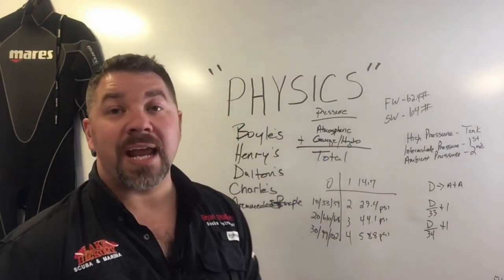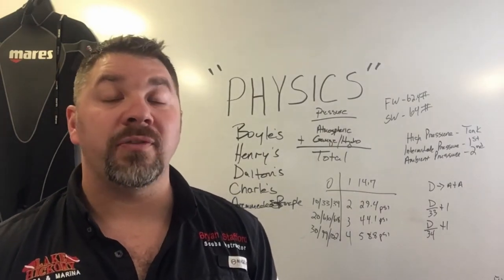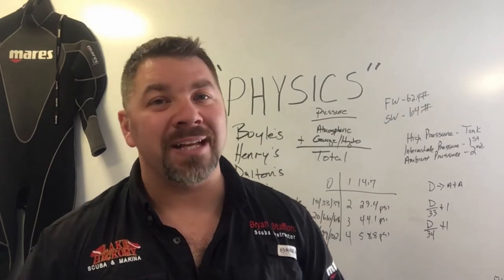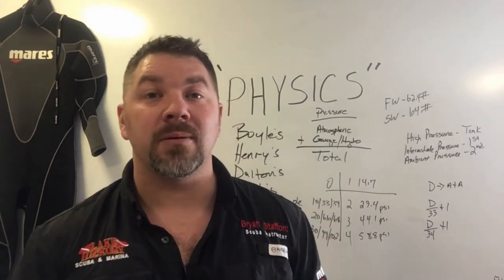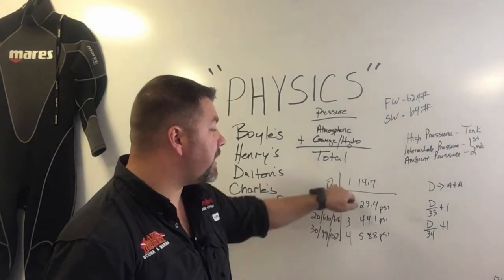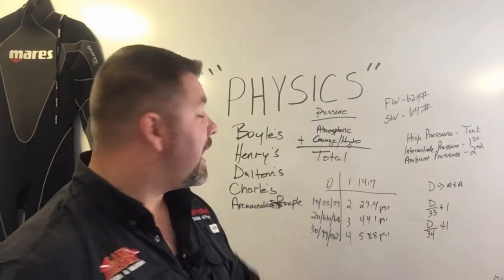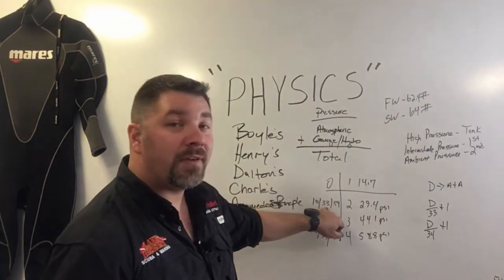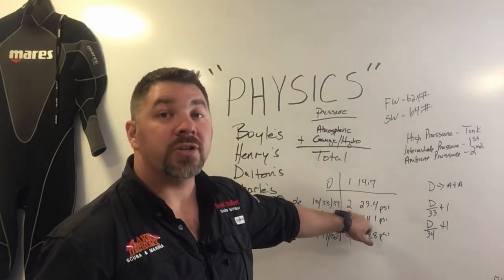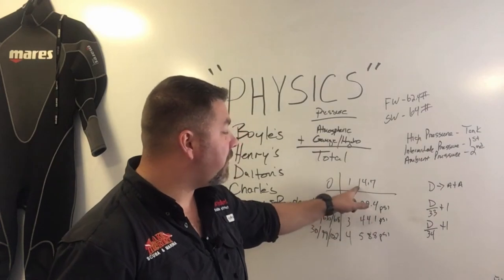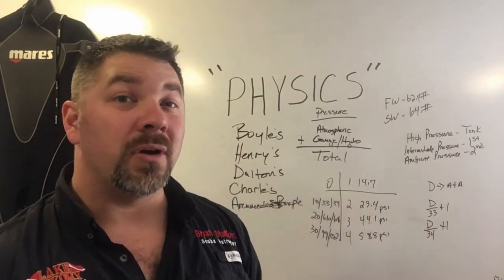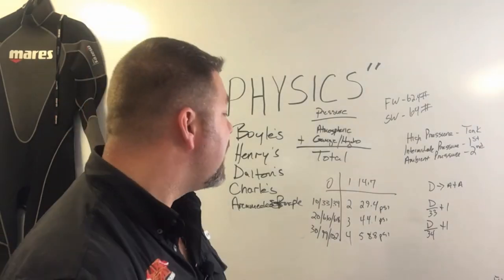Staying with pressure, we're going to look at atmospheric, gauge, hydrostatic, and total pressure. Atmospheric pressure is anything above the surface of the water; gauge and hydrostatic pressure is anything below. Add the two together and you get total pressure. On a chart: at the surface we have a total pressure of 1 atmosphere. At 10 meters — 33 feet of salt water or 34 feet of fresh water — we have a total pressure of 2 atmospheres: 1 at the surface plus 1 below, giving 2 bar or 2 ATA.